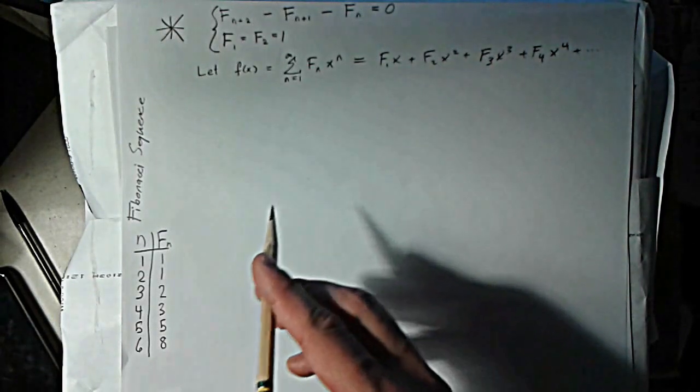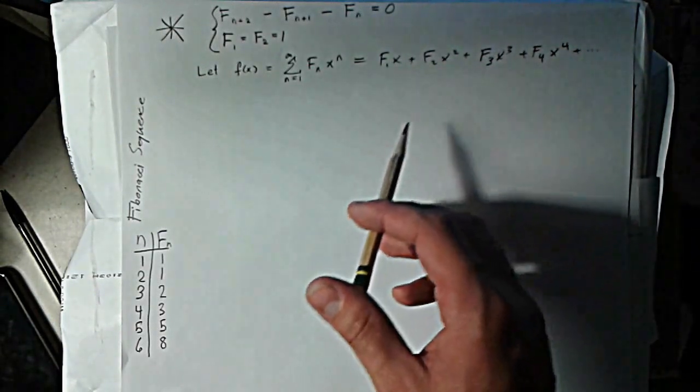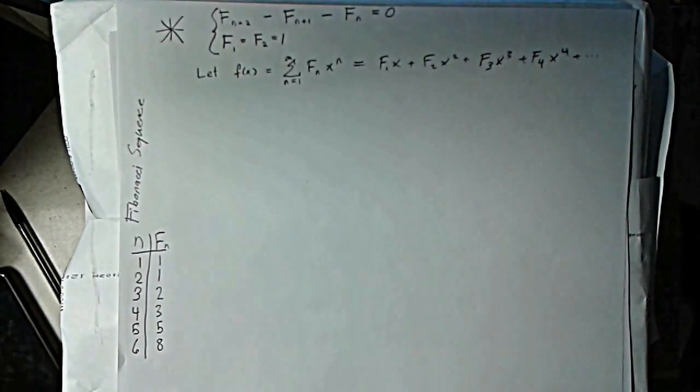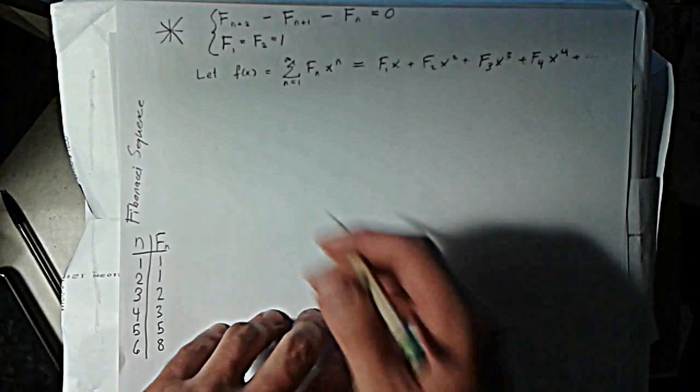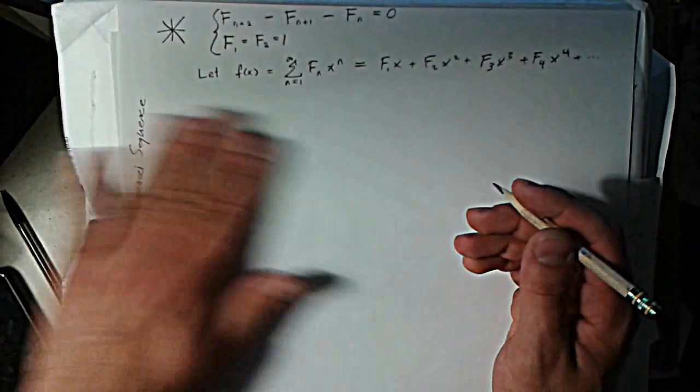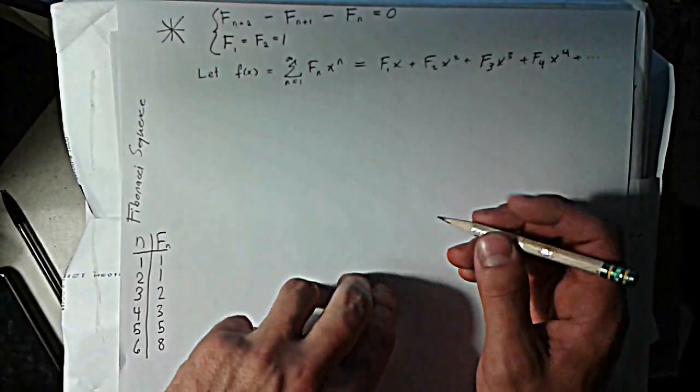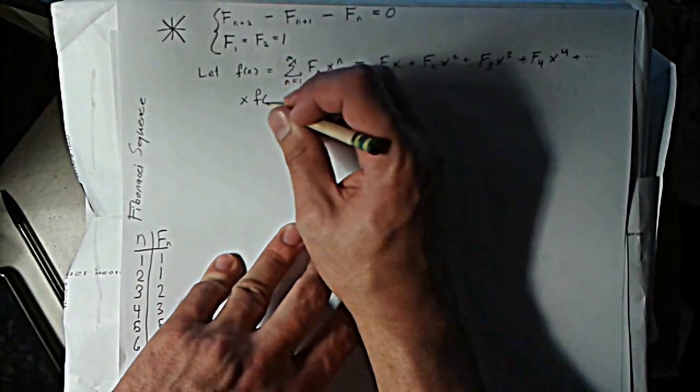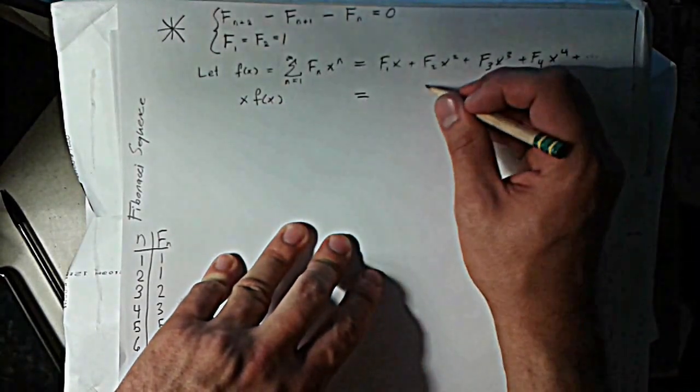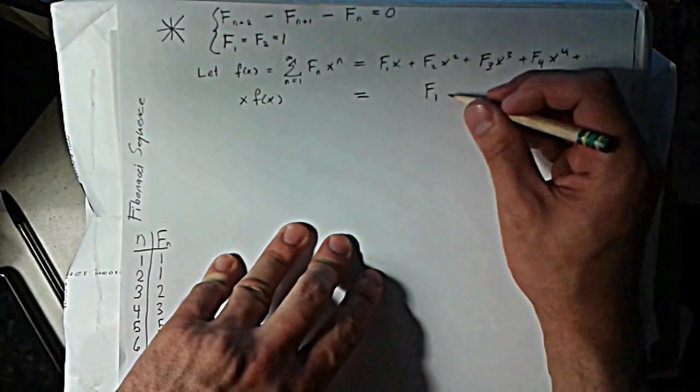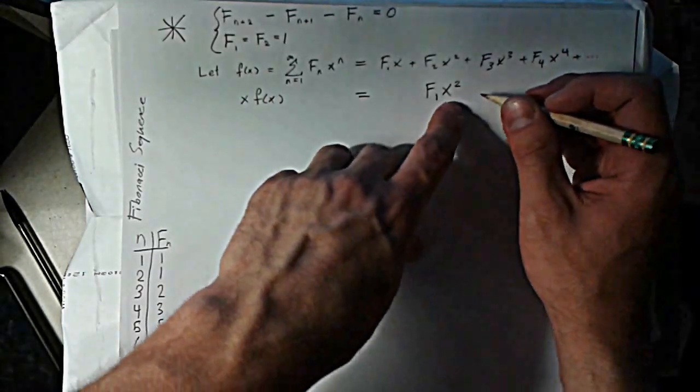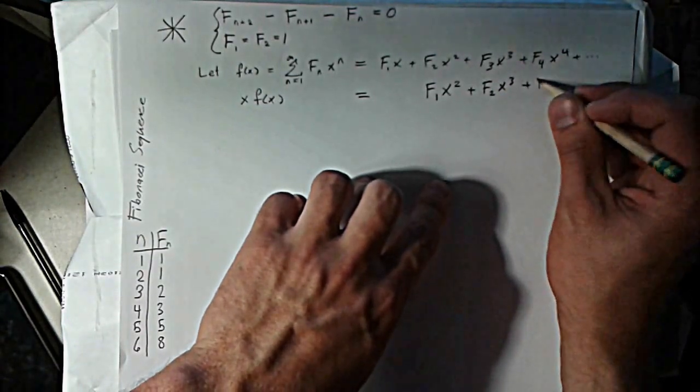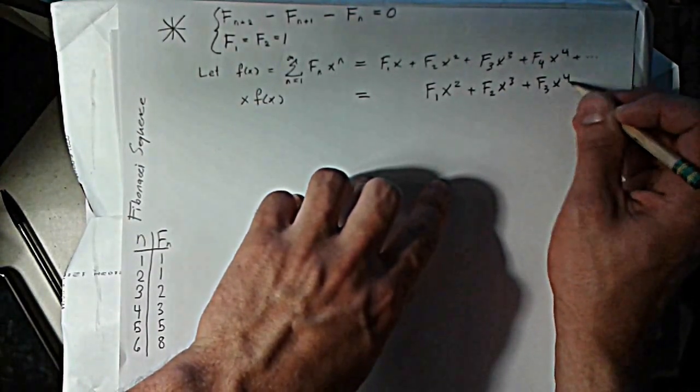My goal is that I want to be able to plug in this original definition of the Fibonacci sequence and find some simplification and be able to solve for f(x). What I can do is if I multiply f(x) times x, then what I'll get is this will shift the F₁ over. It'll be F₁x², and I'll have F₂x³, F₃x⁴, and so on.